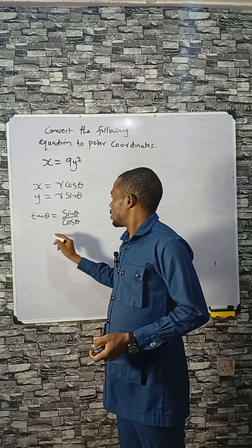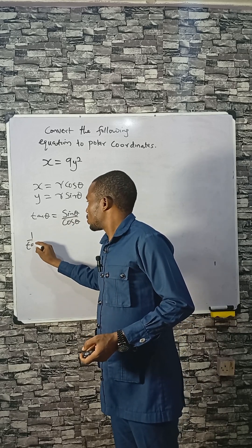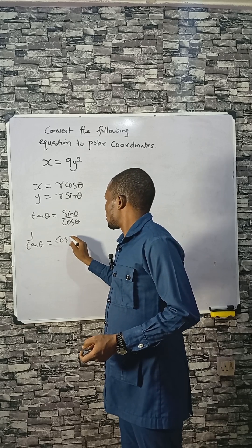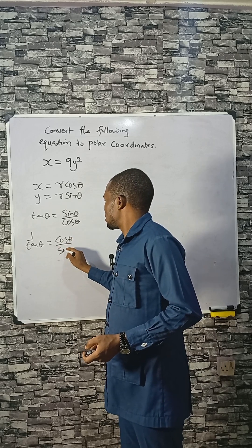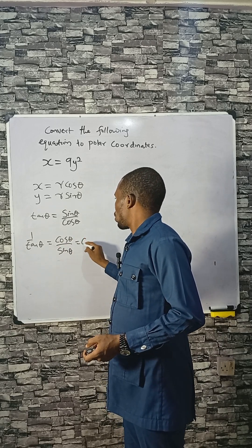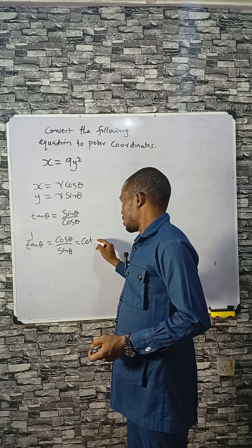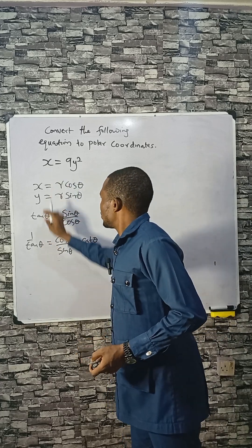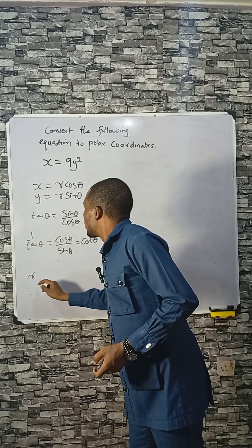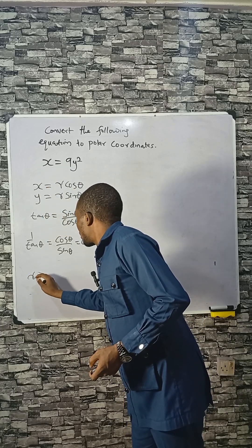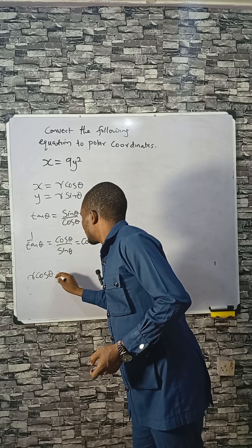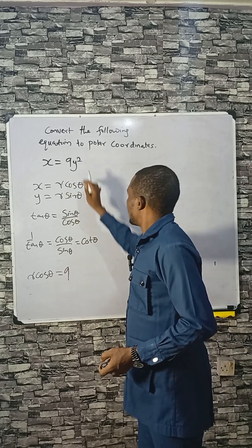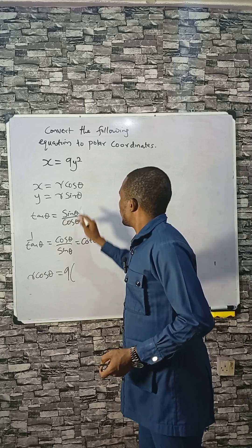Remember that tanθ equals sinθ over cosθ, which means cotθ is cosθ divided by sinθ. Now let's proceed — in place of X we put R cosθ.